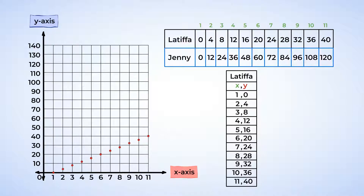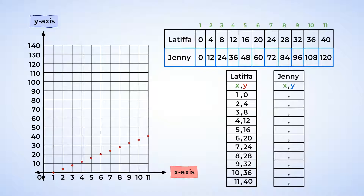Now we can do the same thing with Jenny's points. Using the table, we can rewrite her numbers as coordinates as well: (1,0), (2,12), (3,24), (4,36), (5,48), (6,60).